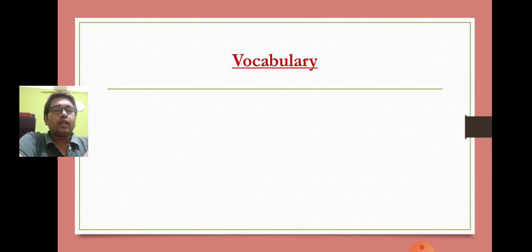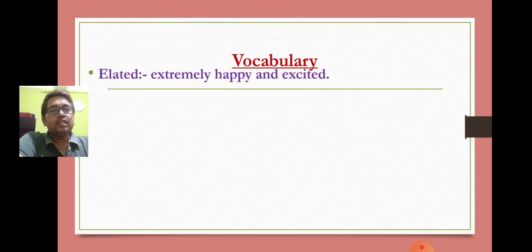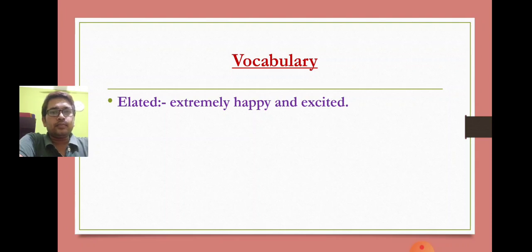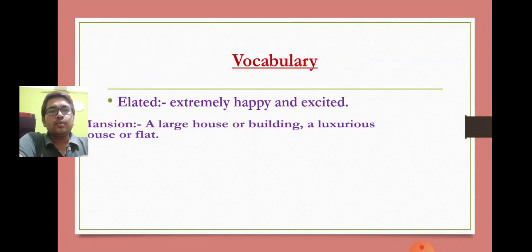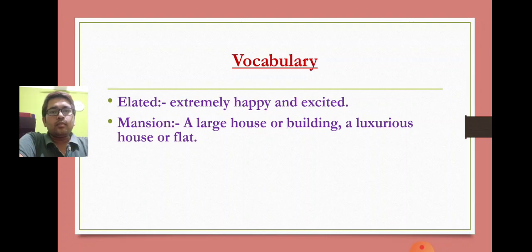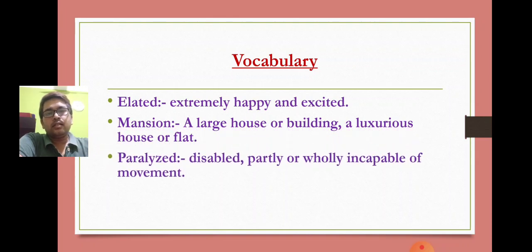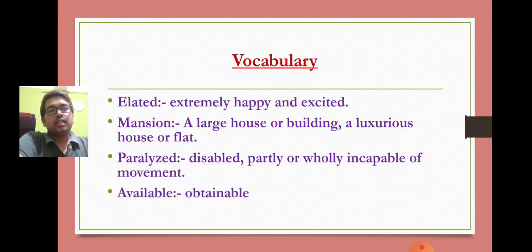First, we are going to discuss vocabularies of this lesson. So here are some vocabularies given. First one is 'elated' — it means extremely happy and excited. Next word is 'mansion' — the meaning of mansion is a large house or building, or a luxurious house or flat. Next one is 'paralyzed' — the meaning of paralyzed is disabled, or partly or wholly incapable of movement. Next word is 'available' — available means obtainable, means something which you can obtain.